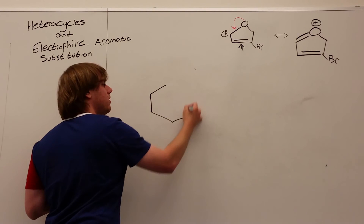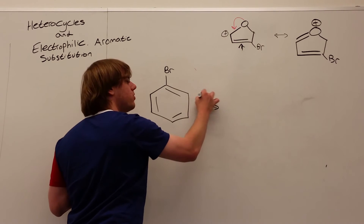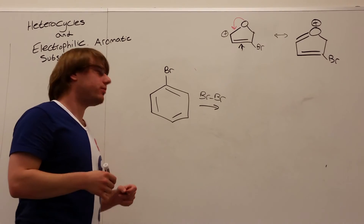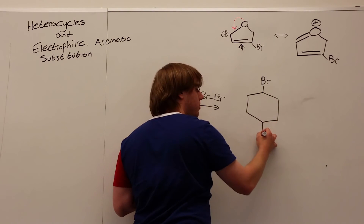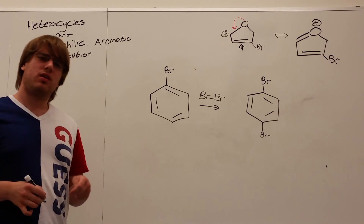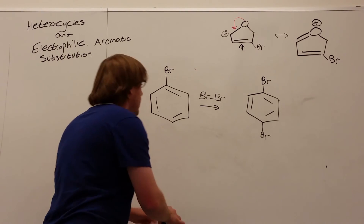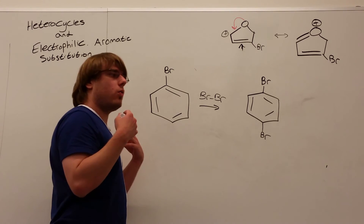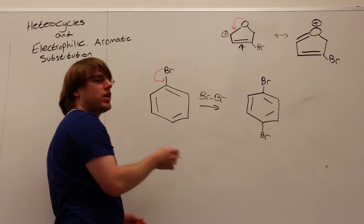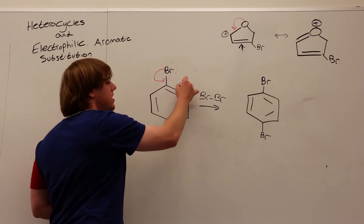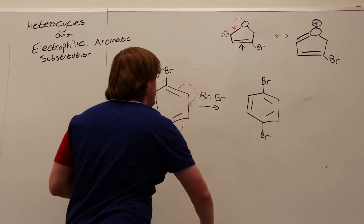Let's draw benzene — halogens on benzene are ortho-para directors. If I add Br2 over the arrow, the bromine ends up at the para position if available. Why is bromine an ortho-para director if it's a withdrawing group? While bromine is a withdrawing group, it functions sort of like a donating group — it has lone pairs just like oxygen, and those electrons can resonate down, forcing electrons onto the para position so they can go out and grab the other bromine.